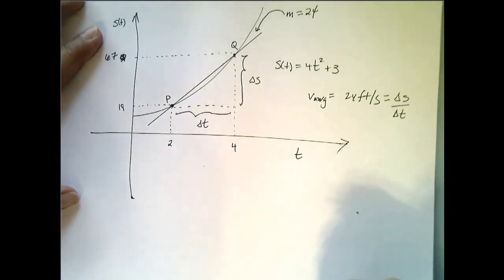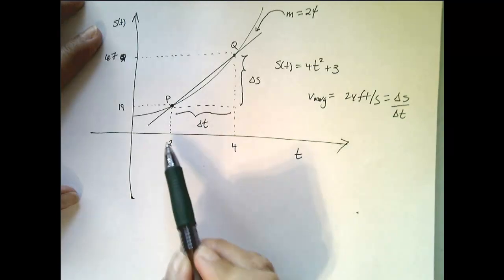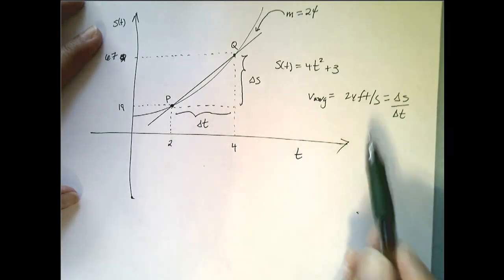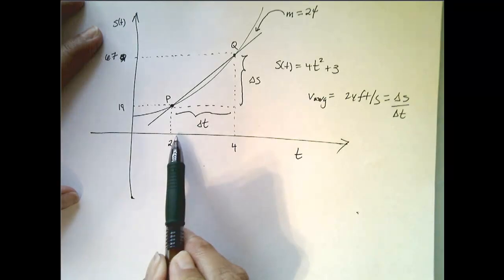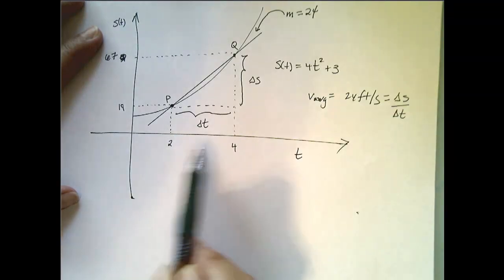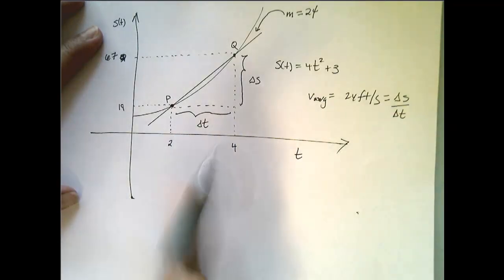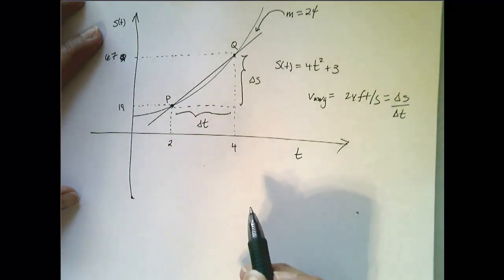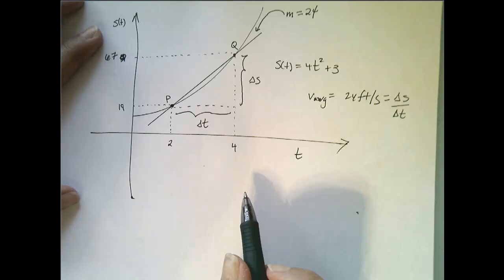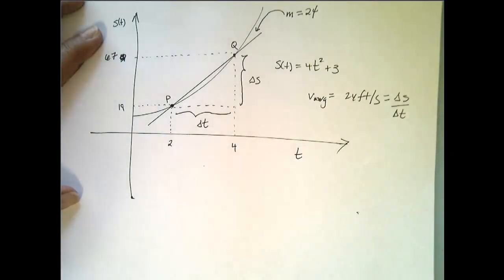Now, another question that you might ask is, well, that's good that it's between 2 and 4. The particle traveled 24 feet per second. But that doesn't mean the particle traveled 24 feet per second at every given time between 2 and 4. It just means that over that time interval, that was the average velocity. So I want to know what the velocity is at time 2. And so that's a different question altogether, and it's one we're going to tackle in the next video.